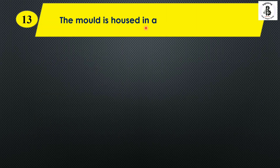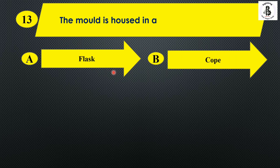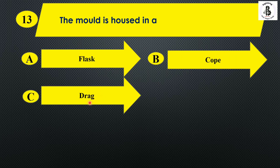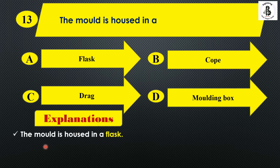The next question: the mold is housed in — option A: a flask; option B: cope; option C: drag; option D: molding box. The mold is housed in a flask, so the right answer is option A.